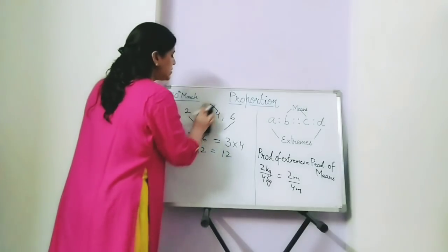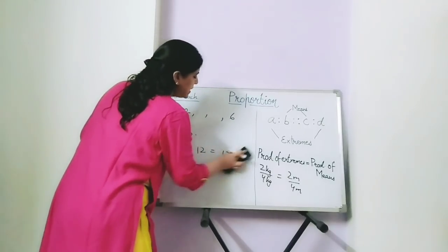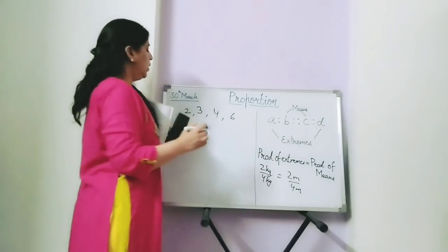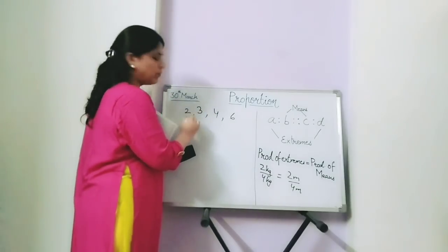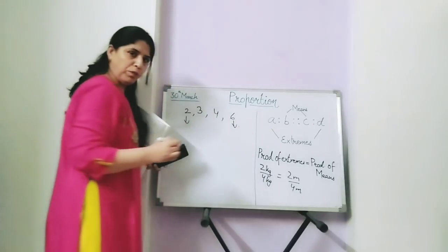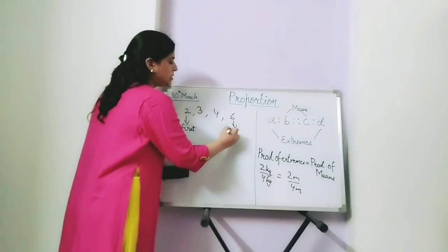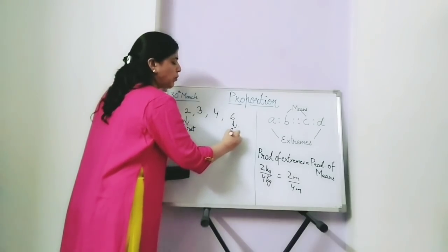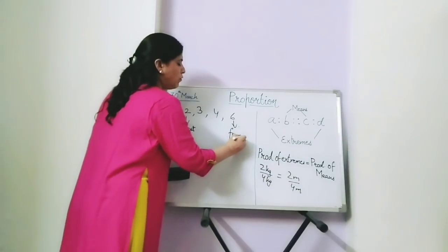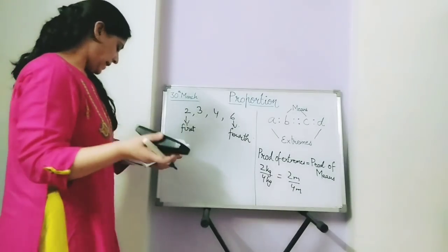Now, if these numbers 2, 3, 4 and 6 are in proportion, just one more thing: 2 is called the first proportional and 6 is called the fourth proportional. This is called the first proportional and this is called the fourth proportional.